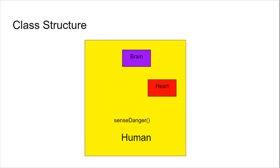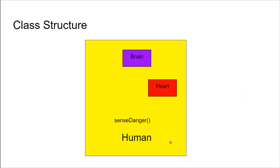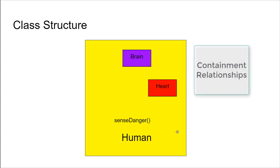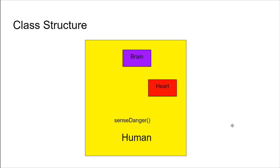This is our class structure inside Java. We have an outer class called human, with a brain class and heart class inside it. When the human senses danger, we want the heart to start beating faster and the human to start sweating. Importantly, the relationship between the human, brain, and heart classes is not an inheritance relationship — we would not say the human is a brain. Instead, this is a containment relationship: the human object contains a brain and a heart.